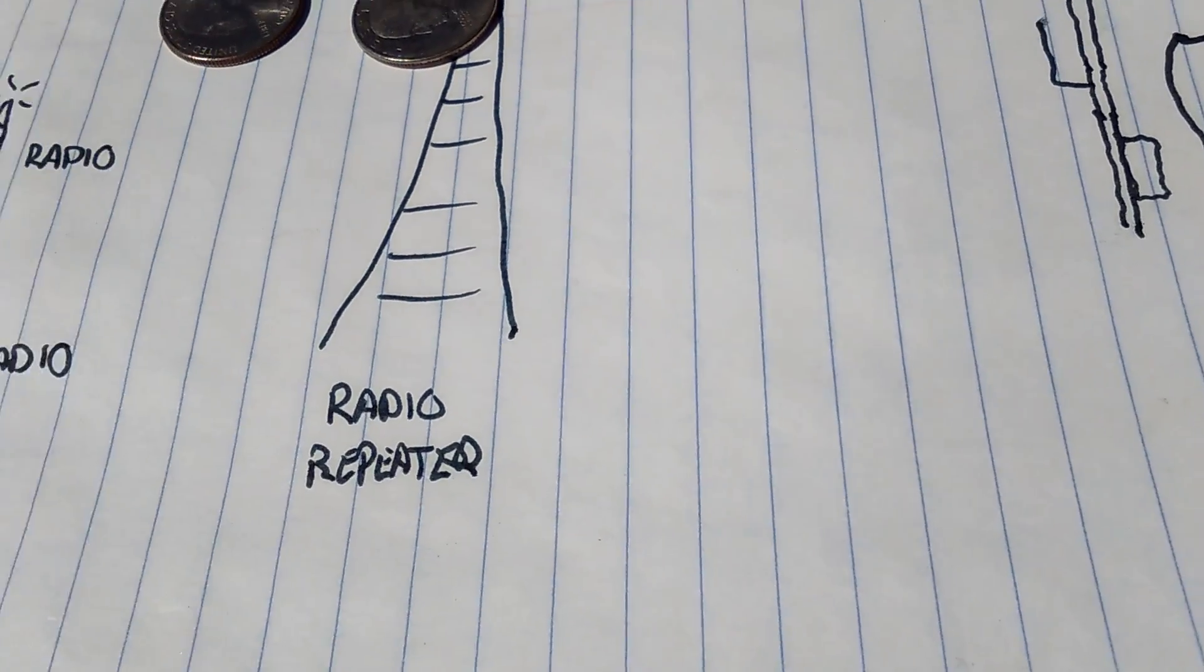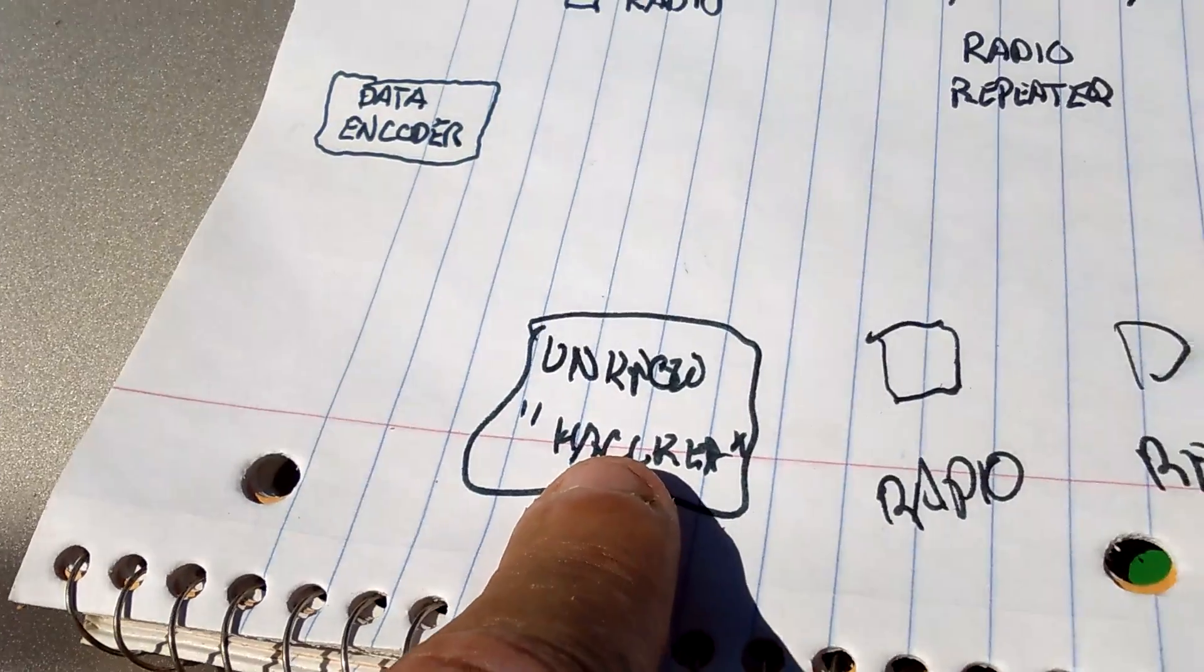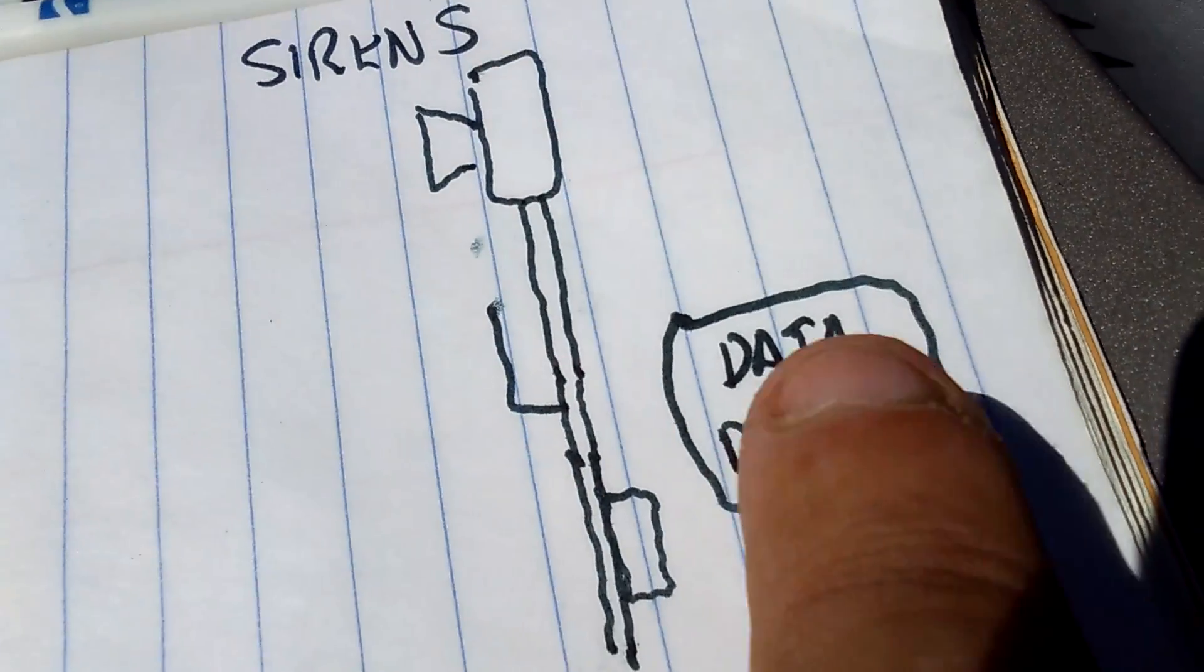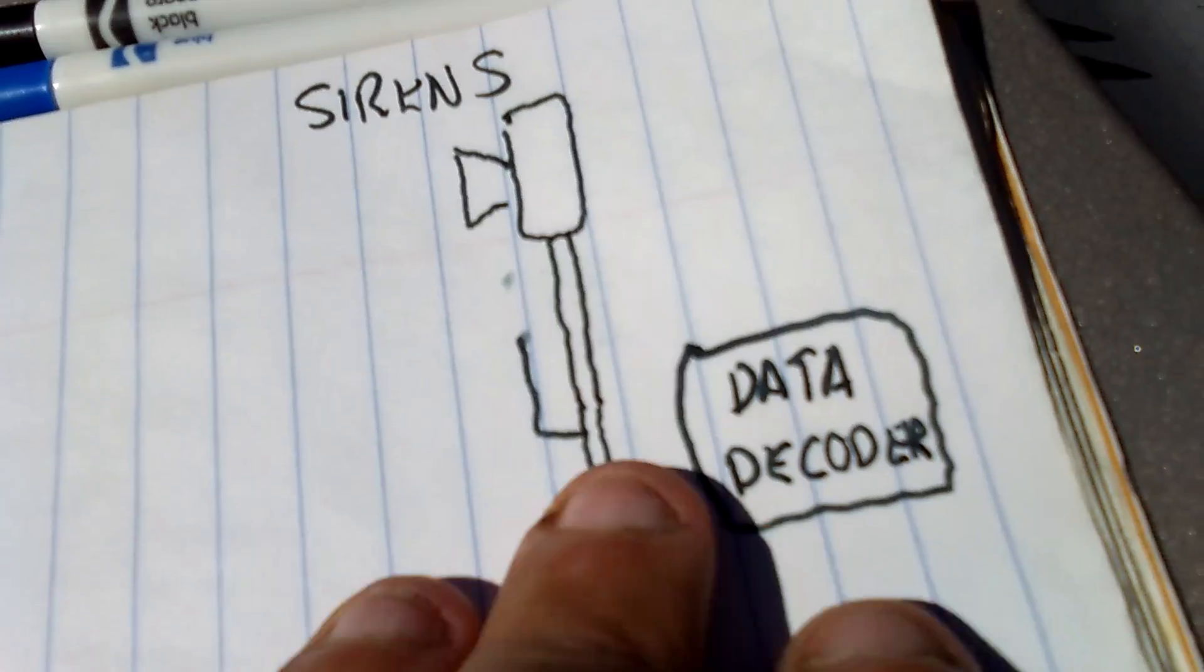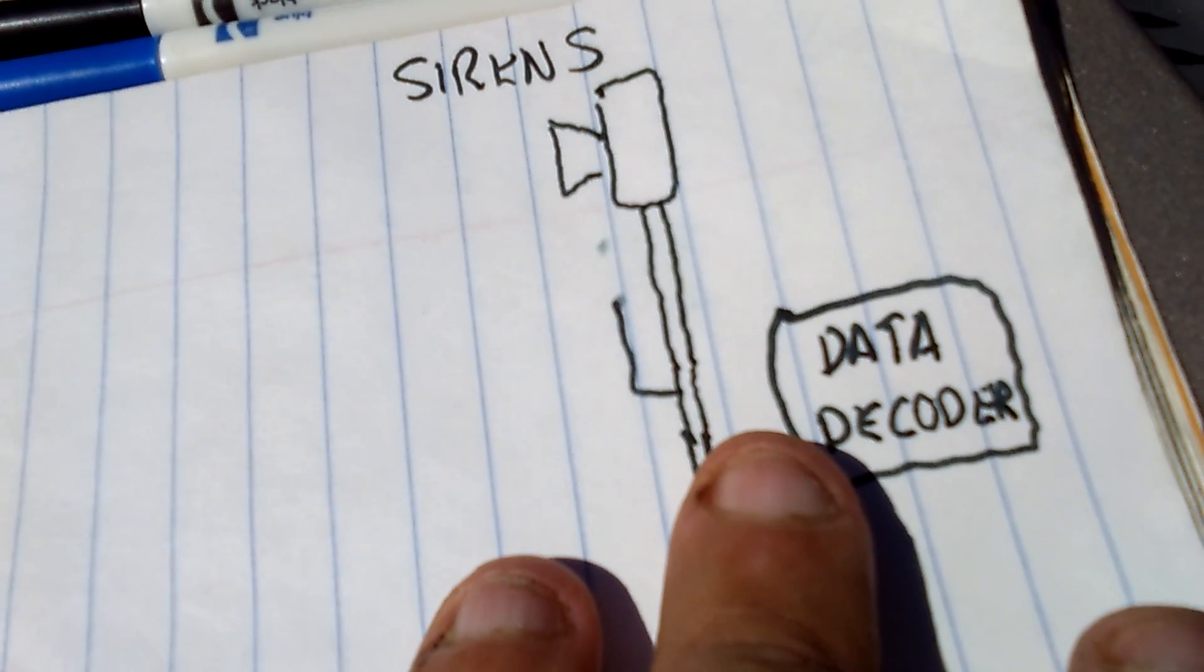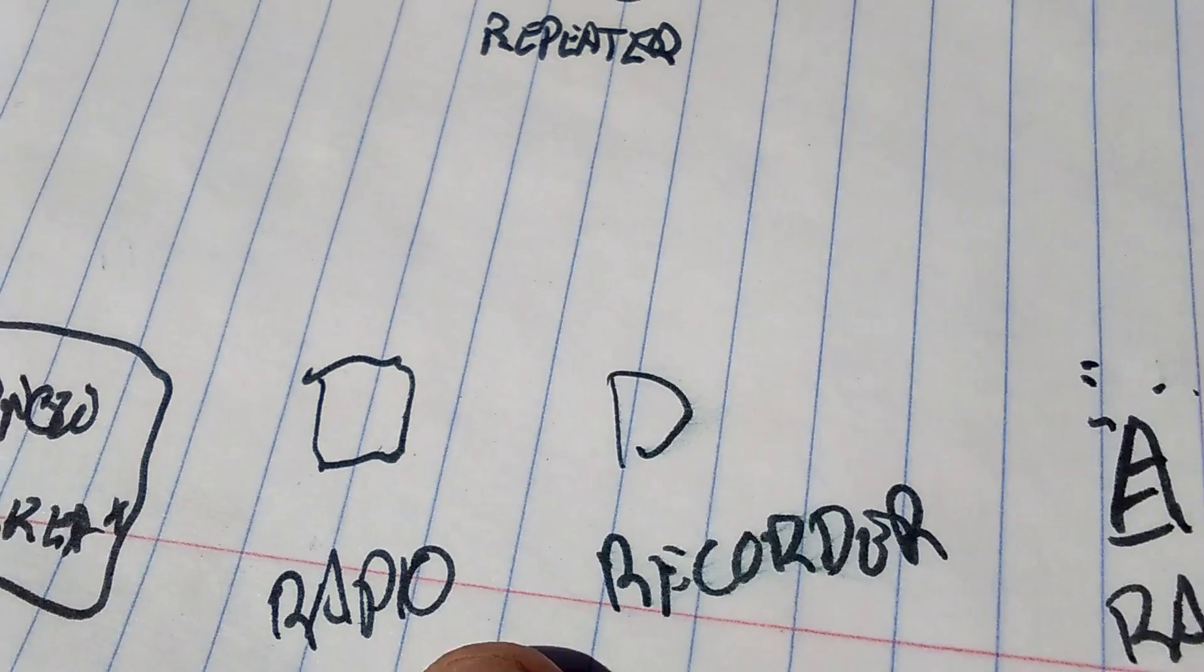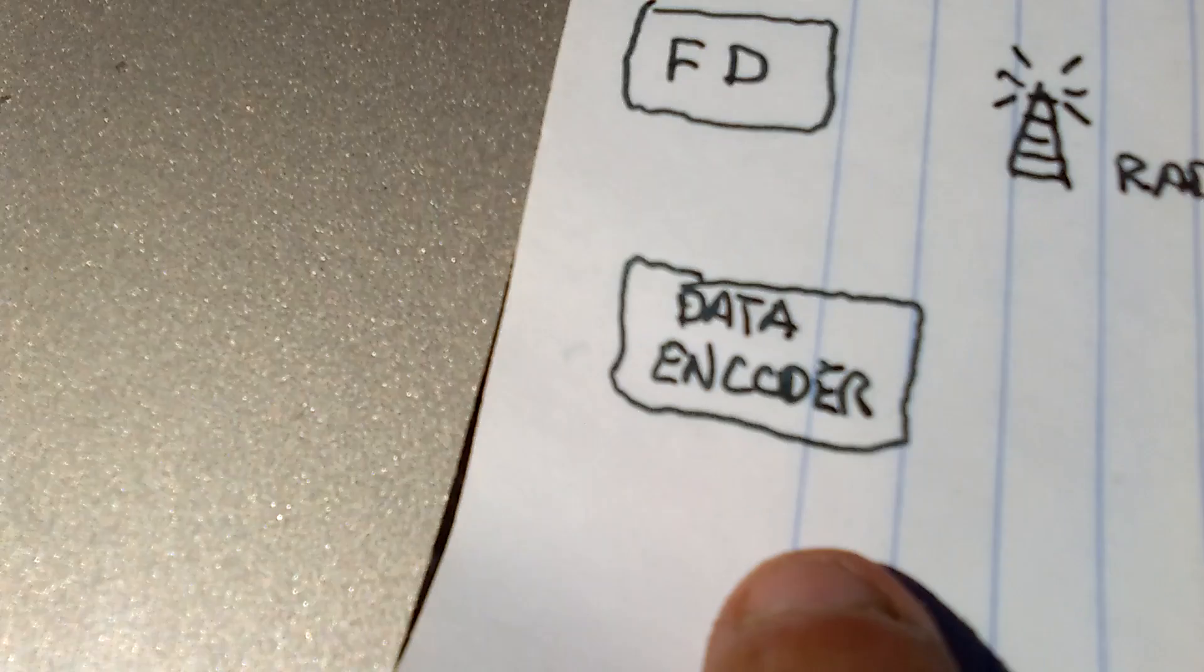They can change the code, and the unknown hacker wouldn't be able to do this. They'd have to change the codes for the data encoder, and every siren that has a data decoder. But, then again, next month, they would have to test the system again. The unknown hacker would be able to use his monitoring radio and his recorder and his radio to get the new code.